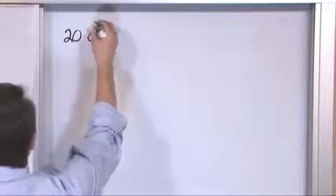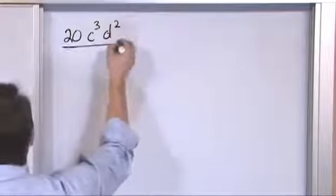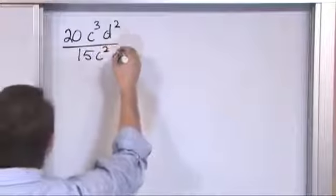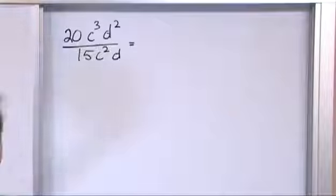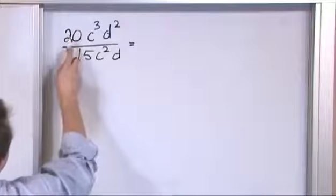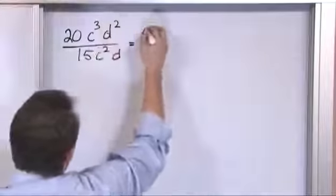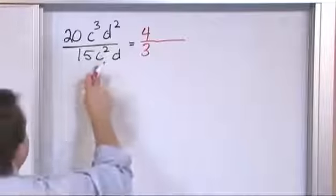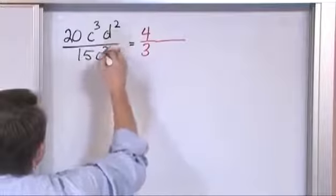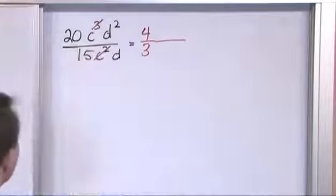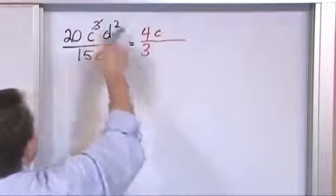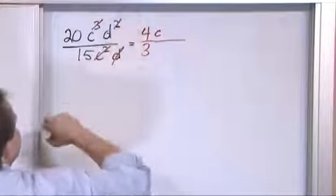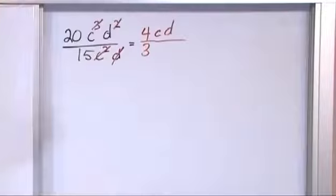Let's do a couple more. What if we have 20c cubed times d squared over 15c squared times d? First the numbers: divide by 5. 20 divided by 5 is 4, 15 divided by 5 is 3. For the variables: c squared on the bottom cancels with two of the c's from c cubed, leaving one c on top. One d on the bottom cancels with one d from d squared, leaving one d on top. So the answer is 4cd over 3.